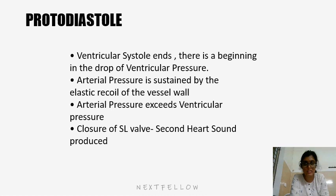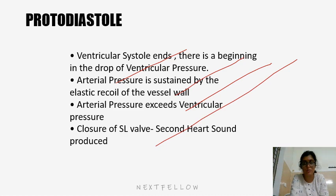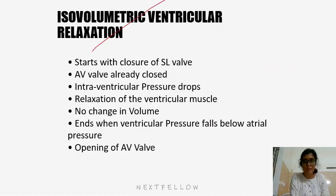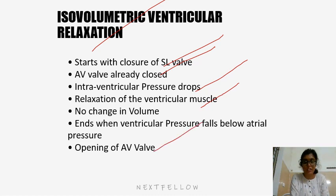During protodiastole, ventricular systole ends and there is a beginning drop in ventricular pressure. Atrial pressure is sustained by the elastic recoil of the vessel wall, and atrial pressure exceeds ventricular pressure, causing closure of the semilunar valve — producing the second heart sound. Isovolumetric ventricular relaxation starts with closure of the semilunar valve while the AV valve remains closed. Intraventricular pressure drops due to relaxation of the ventricular muscle, with no change in volume, until ventricular pressure falls below atrial pressure and the AV valve opens.